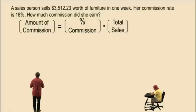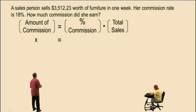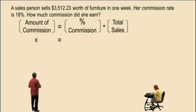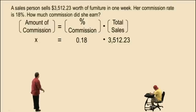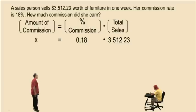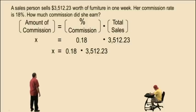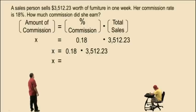Since we're looking for the amount of commission, we will represent that quantity by x. The percent commission is 18% — changing that to a decimal, move it two places to the left, we get 0.18. The total sales was $3,512.23. So to calculate x, multiply 0.18 times $3,512.23.